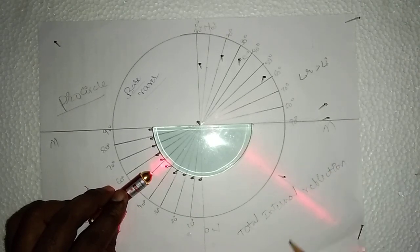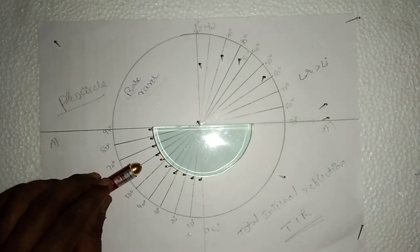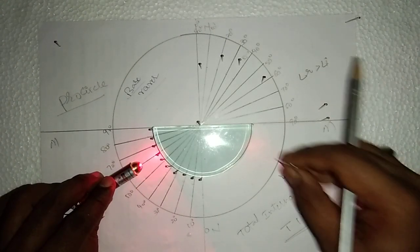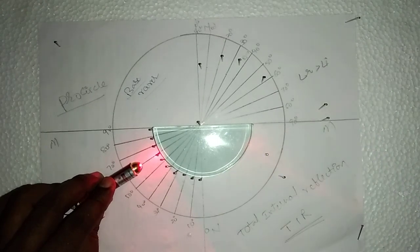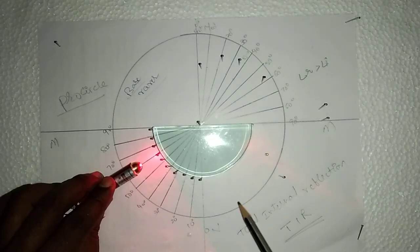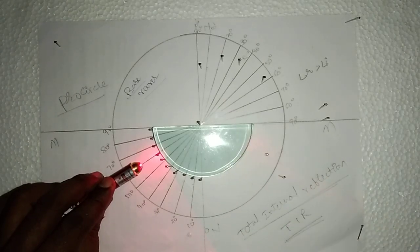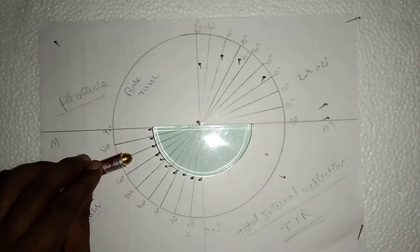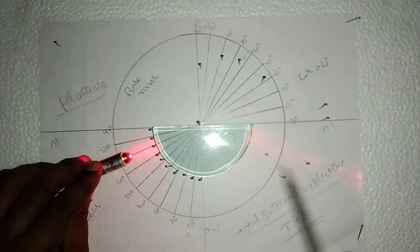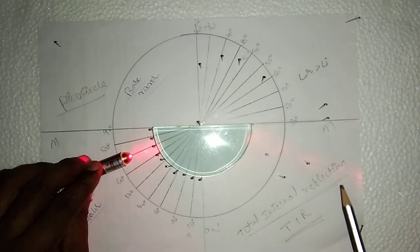Total internal reflection — simply called TIR. Once again, if we pass the light ray at an angle of 60 degrees, the light ray again comes in the same direction, meaning light never enters into the rarer medium; it again enters into the denser. The condition for total internal reflection is that the light should travel from denser to rarer. At 70 degrees also, light again enters into the denser only — it never enters into the rarer.